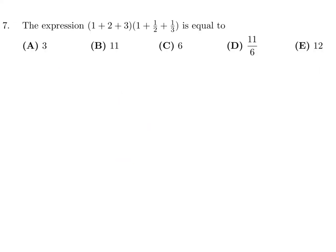The expression is equal to 2. So we've got 1 plus 2 plus 3. And we have 1 plus 1 half plus 1 third. Well, that's 6. And this, I guess if we get a common denominator, we'll get 6 plus 3 plus 2. And this looks like it's 11. And therefore, number 7, the answer is B.